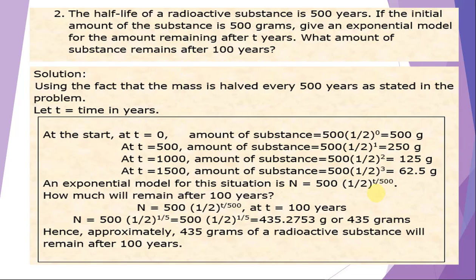To find how much remains after 100 years, plug in t equals 100: N equals 500 times (1/2) raised to 100 over 500, giving approximately 435.2753 grams, or rounded to the nearest gram, 435 grams. Hence approximately 435 grams of the radioactive substance will remain after 100 years.